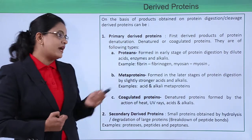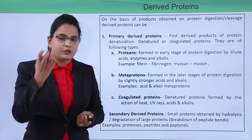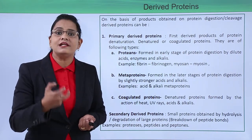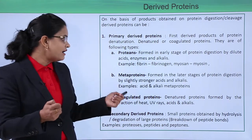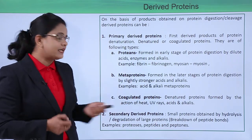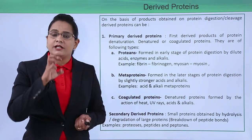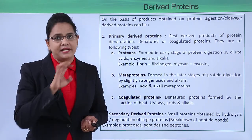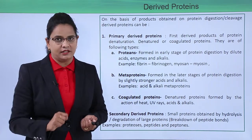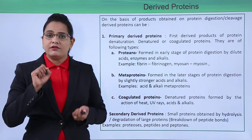Next are metaproteins. Metaproteins are also products of denaturation, but formed at a slightly later stage. Examples are acid and alkali metaproteins. The next category is coagulated proteins — those proteins which have been completely denatured by the action of UV rays, heat, acid, or alkali.